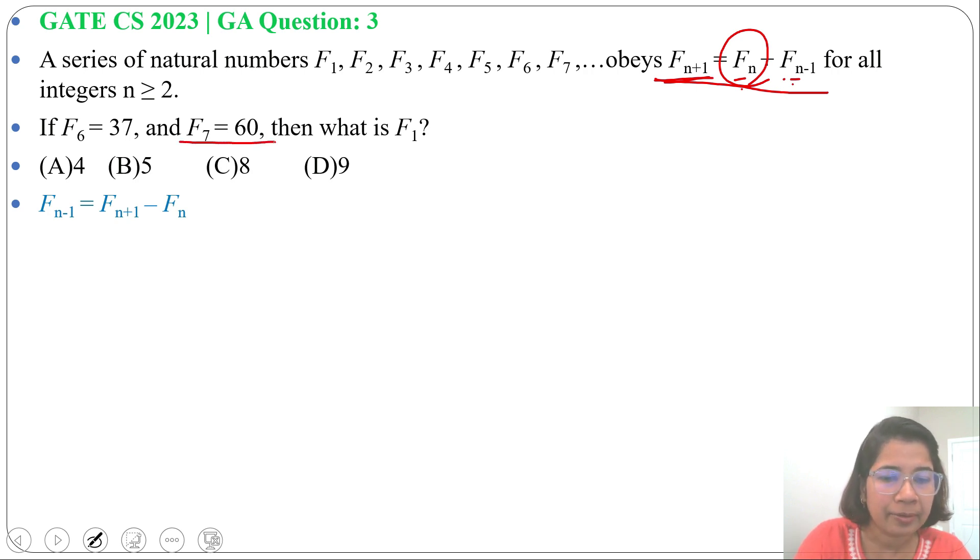Now f(7) is given and f(6) is given. So from that we can find f(5). f(5) will be f(7) - f(6).